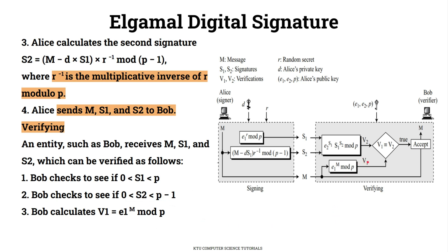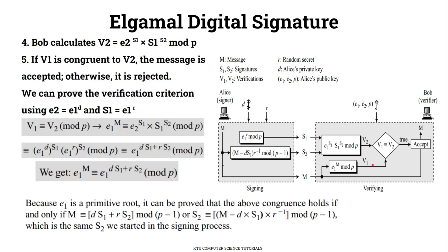V1 is computed as E1 raised to M, mod P. V2 is computed as E2 raised to S1, multiplied by S1 raised to S2, all mod P. S1 has already been communicated and S2 is calculated accordingly.